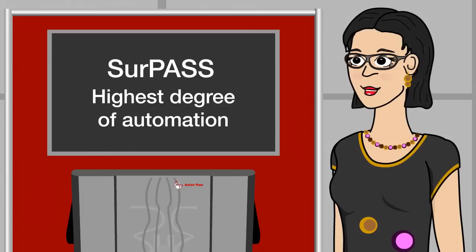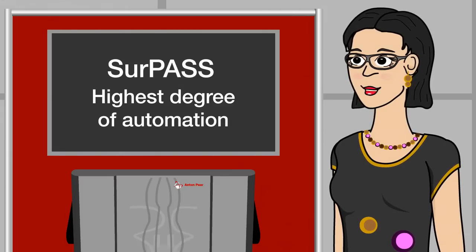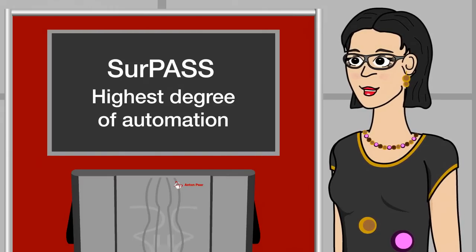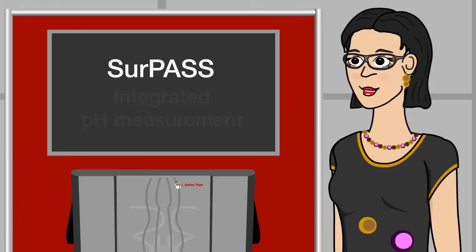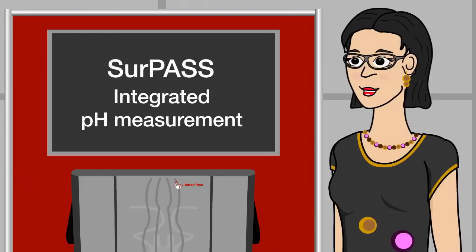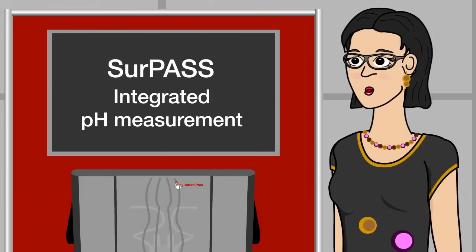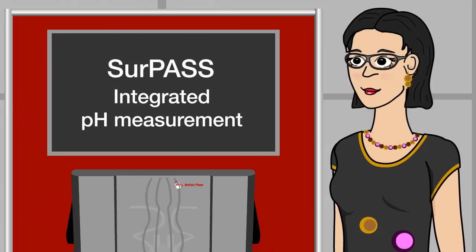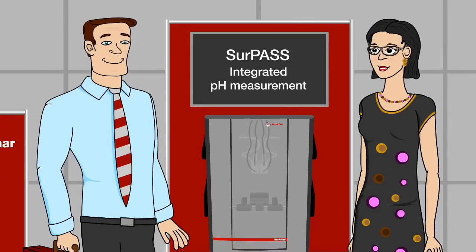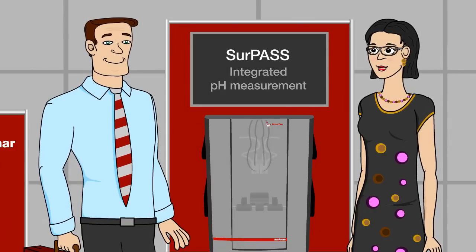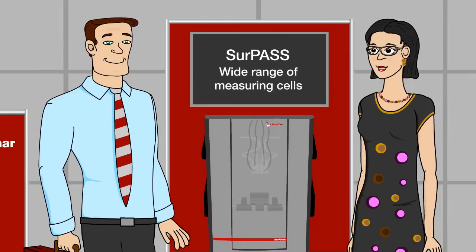SURPASS has the highest degree of automation, so it's the most reliable option. You can let it run measurements by itself for a whole day. With other solutions, you have to stay with the instrument and make adjustments all the time. Plus, SURPASS has an integrated pH measurement. No other solution has that, even though the pH value is an essential factor in zeta potential analysis. SURPASS automatically measures the pH value constantly.